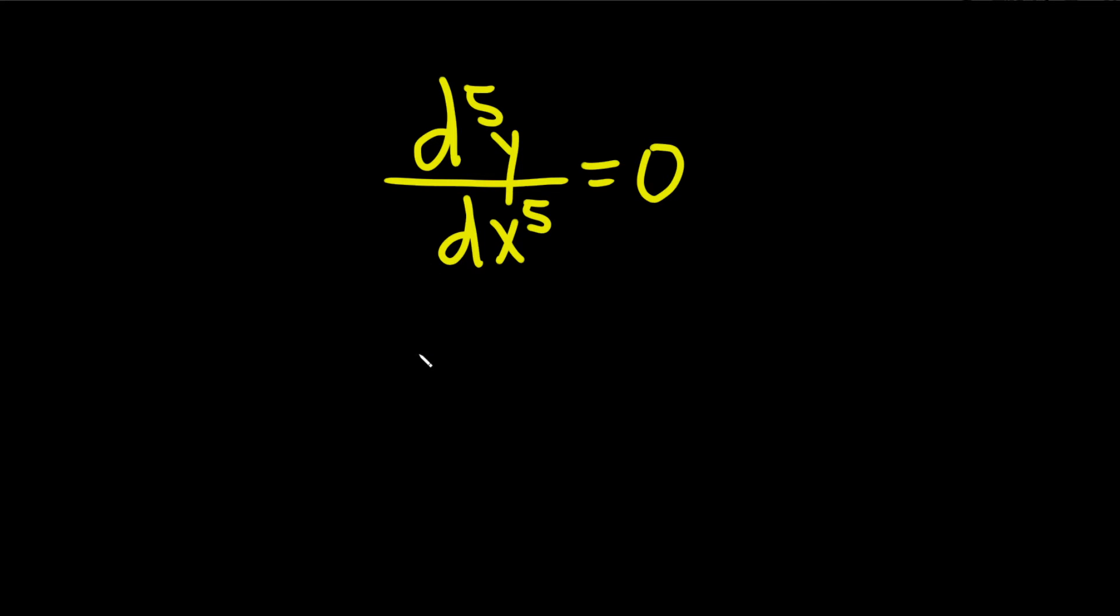So because it's the fifth derivative, we write down m to the fifth, and it's equal to zero.